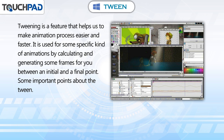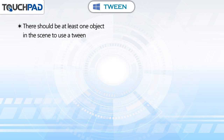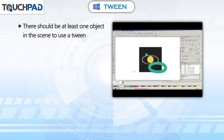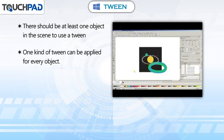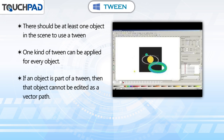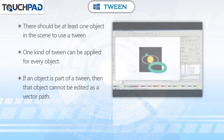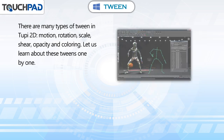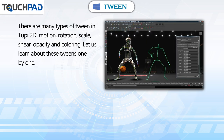Some important points about the tween: there should be at least one object in the scene to use a tween. One kind of tween can be applied for every object. If an object is part of a tween, then that object cannot be edited as a vector path. There are many kinds of tween in Tupi 2D.